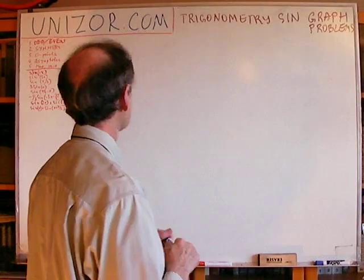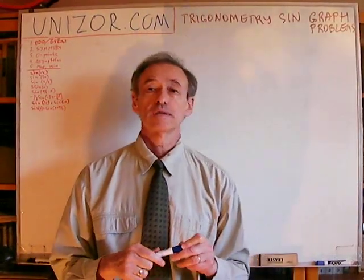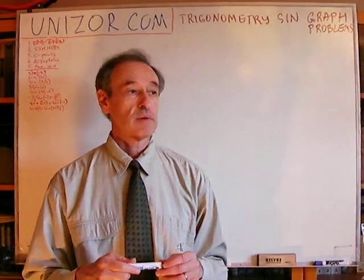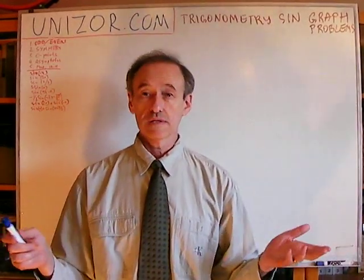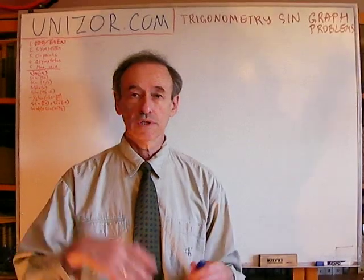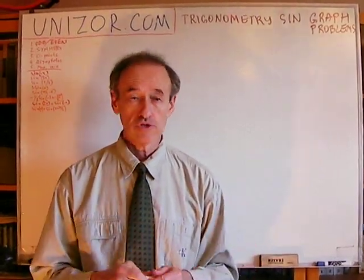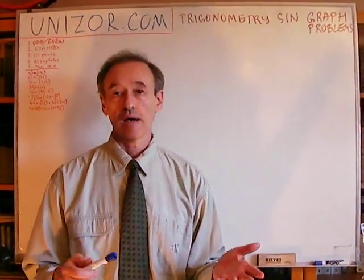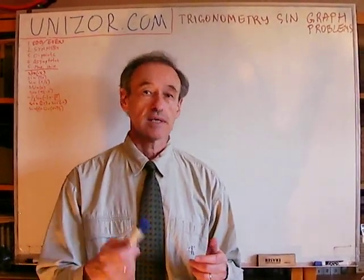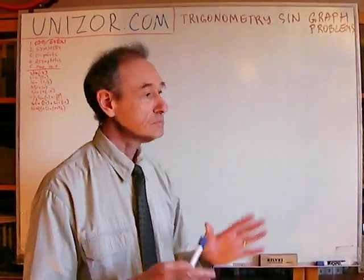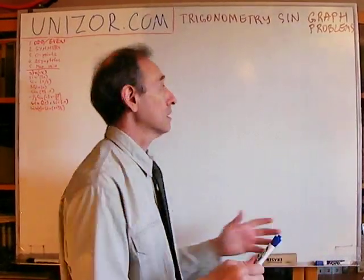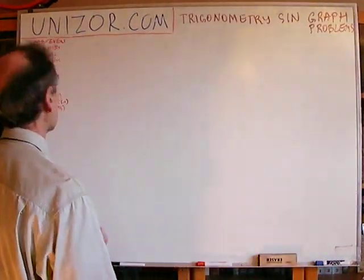Next is maximum and minimum. Some functions have a maximum and minimum, like sine. Some functions don't — they go to negative infinity to positive infinity, like tangent. And some functions have only local minimums and local maximums, like secant and cosecant. Understanding all these issues, let's go through examples one by one.